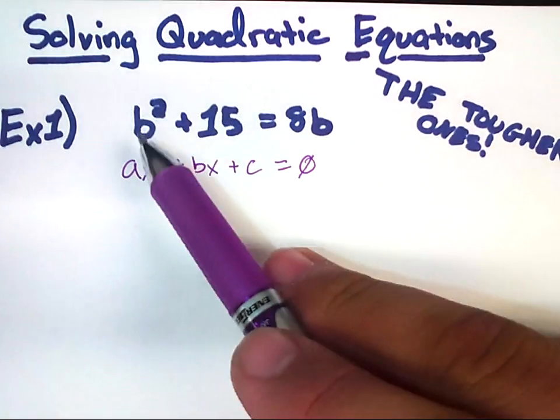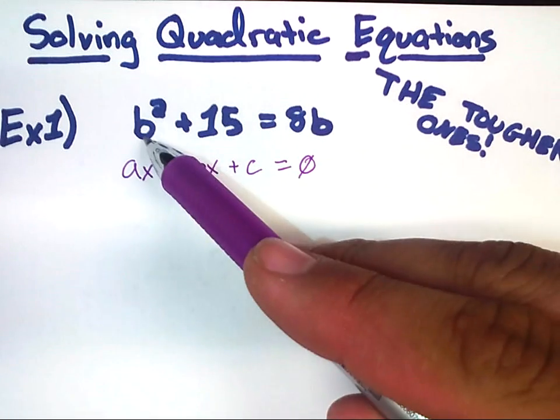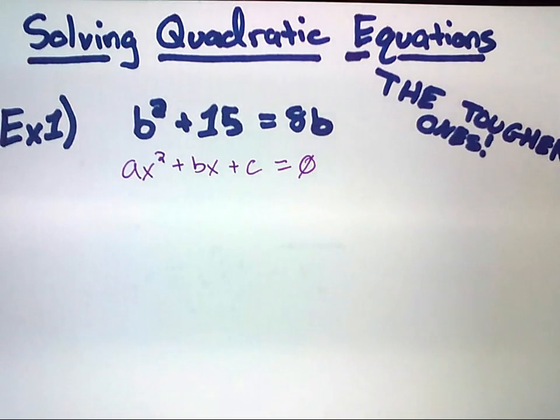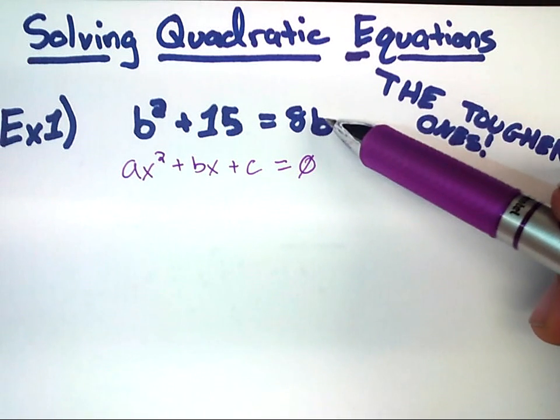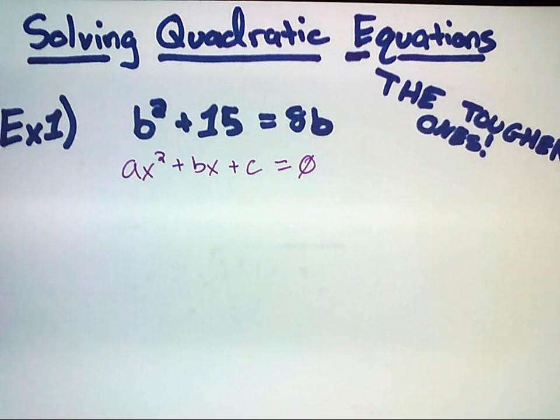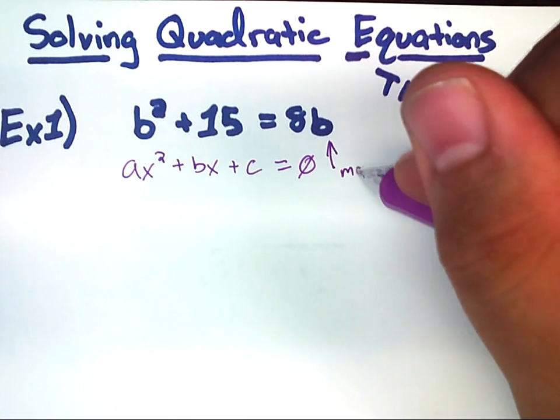In this example, we have b squared plus 15 equals 8b. Now, it doesn't matter that these are different variables. It makes no difference. However, the bigger problem is we have 8b on the wrong side, and we don't have anything equal to zero. So, what we want to do is we're going to take this right here, and we're going to move it to the other side.